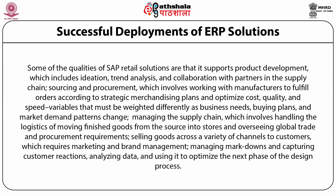Some qualities of the SAP retail solution include support for product development — ideation, trend analysis, and collaboration with partners in the supply chain. Sourcing and procurement includes working with manufacturers to fulfill orders according to strategic merchandising plans and optimizing cost, quality, and speed variables. Managing the supply chain involves handling the logistics of moving finished goods from source into stores and overseeing global trade and procurement requirements. It also includes selling goods across a variety of channels, marketing and brand management, managing markdowns, capturing customer reaction, and analyzing data to optimize the design process.